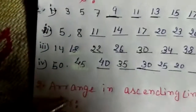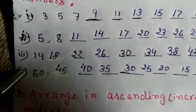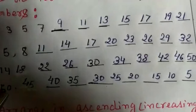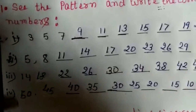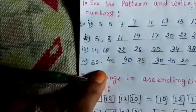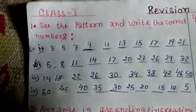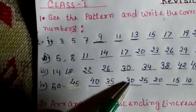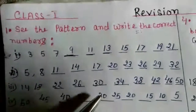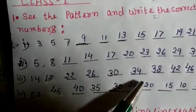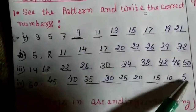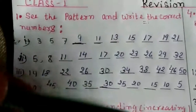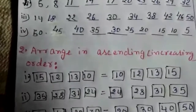Next pattern: 50, then 45. Here it is backward counting — 50 is bigger and 45 is smaller, so they are subtracting. In 50 we subtract 5 to get 45. In 45 we subtract 5 to get 40. In 40 subtract 5 to get 35. In 35 subtract 5 to get 30. In 30 subtract 5 to get 25. In 25 subtract 5 to get 20. In 20 subtract 5 to get 15. In 15 subtract 5 to get 10. In 10 subtract 5 to get 5. Question number 1 is clear.